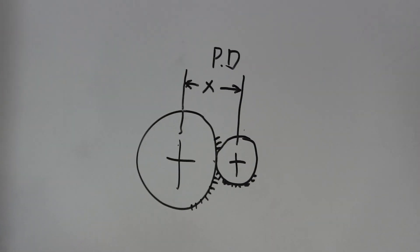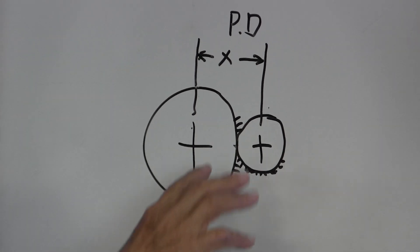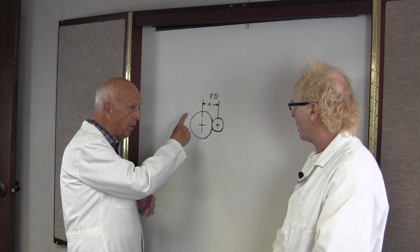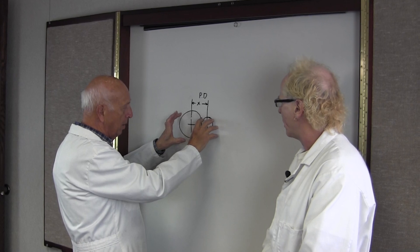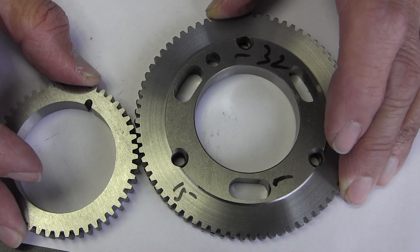But if you put teeth in there, then that tooth goes into this one and this tooth goes into that one. So the pitch diameter is exactly that—it's the diameter of the pitch of the gear.